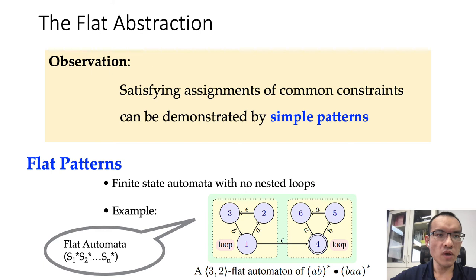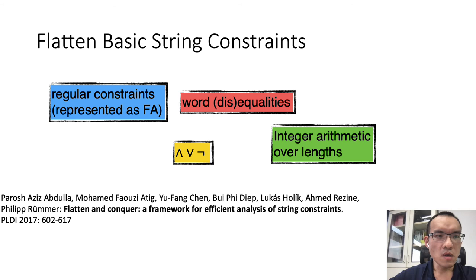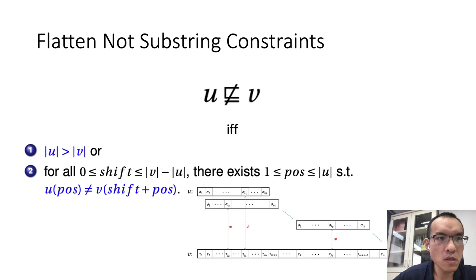They are expressible by finite state automata with no nested loop. Or in other words, strings in the form of S1 star, S2 star to SN star. S1 to SN are strings, and the star means repetition. By restricting to the flat pattern, in PLDI 2007, we showed that the problem of solving basic string constraint can be reduced to the problem of solving quantifier-free Presburger formulae.